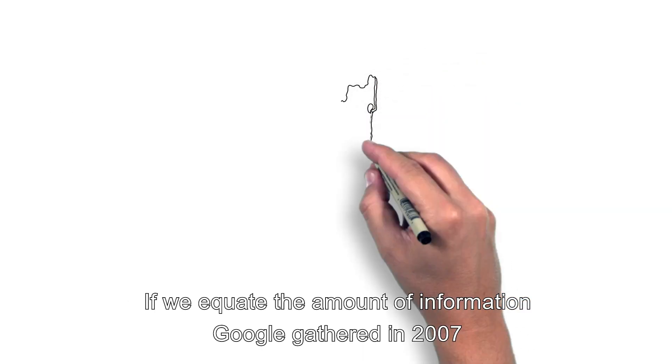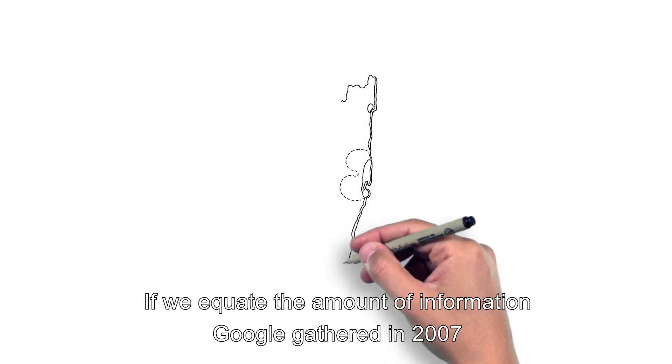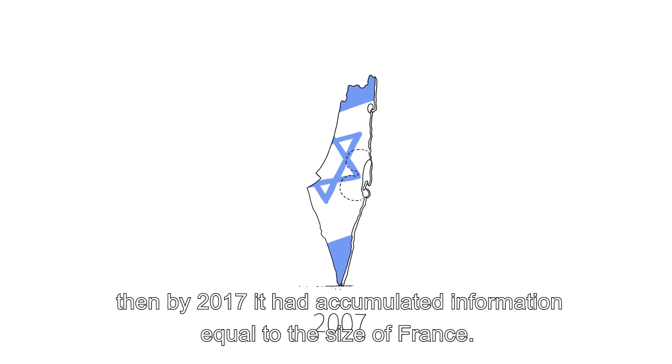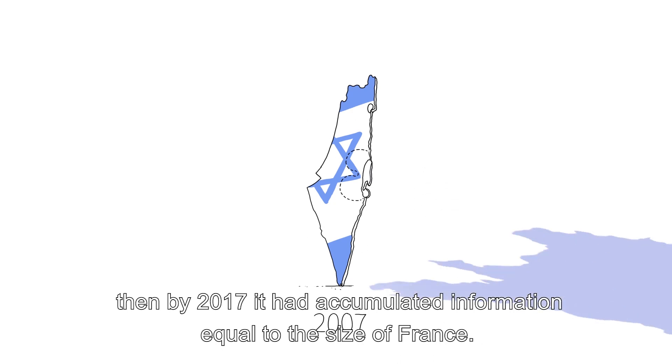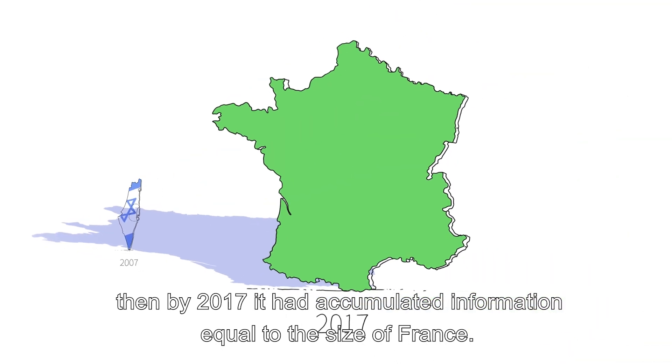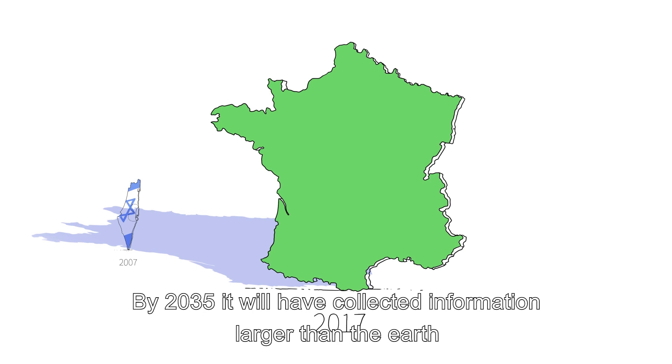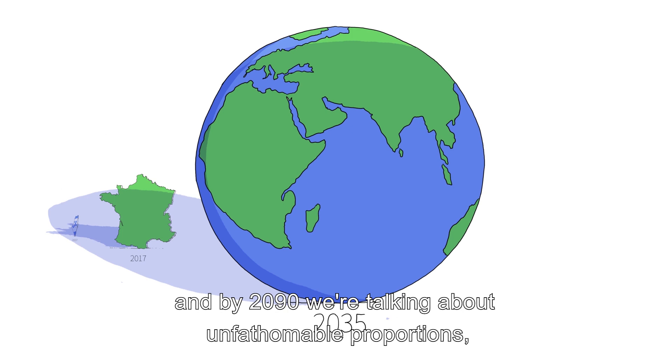If we equate the amount of information Google gathered in 2007 to the size of the state of Israel, then by 2017, it has accumulated information equal to the size of France. By 2035, it will have collected information larger than the earth. And by 2090,